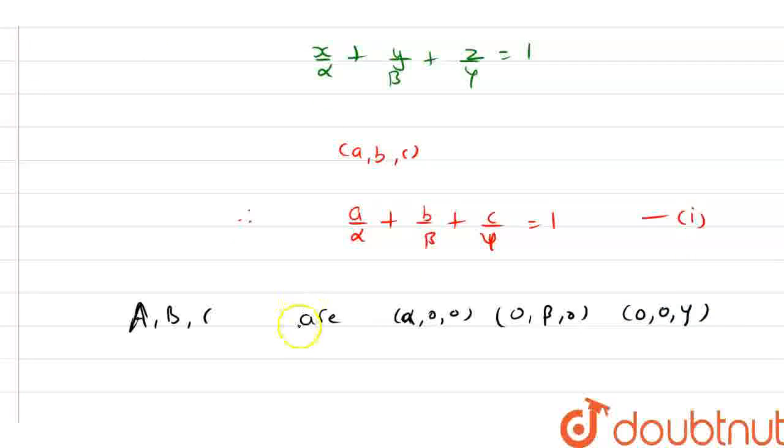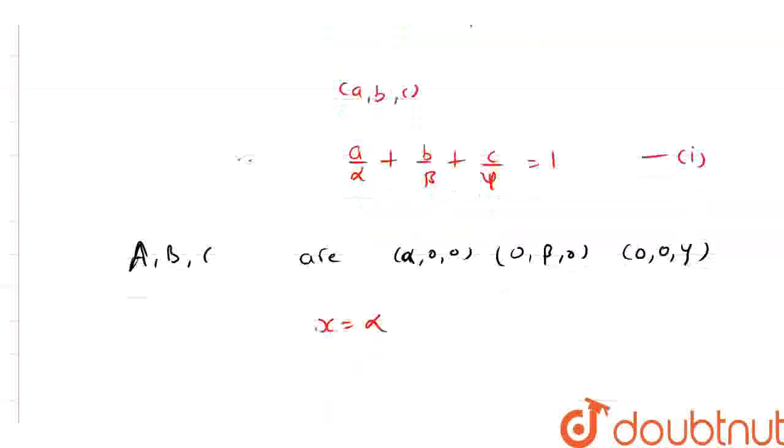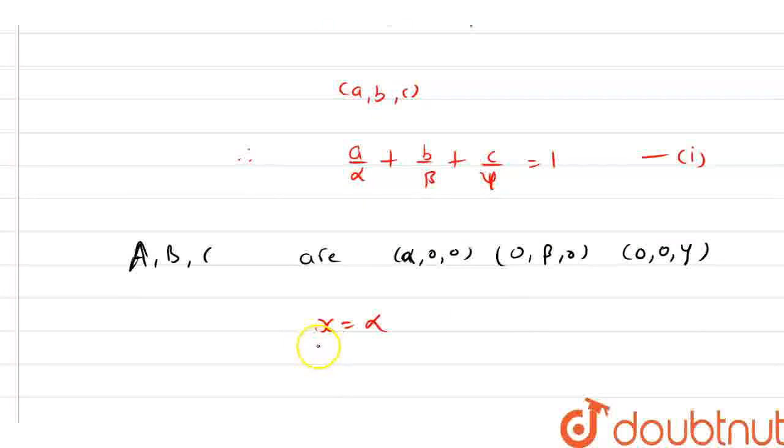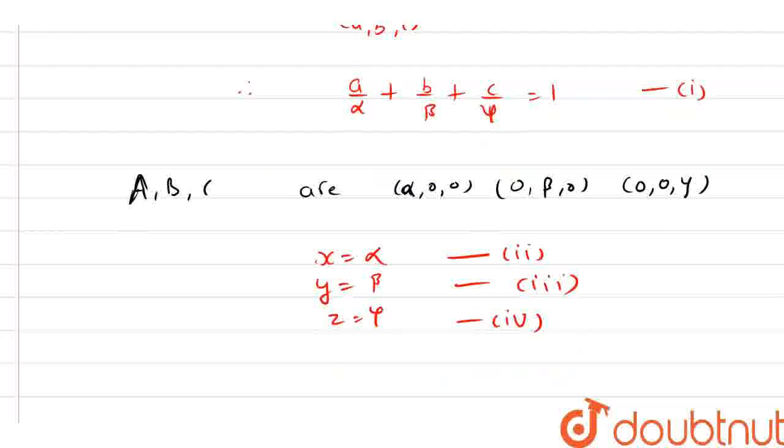Now the equation of plane through A, B, C parallel to the coordinate planes are: X equals alpha, Y equals beta, and Z equals gamma. Name this as equation number 2, equation number 3, and equation number 4.